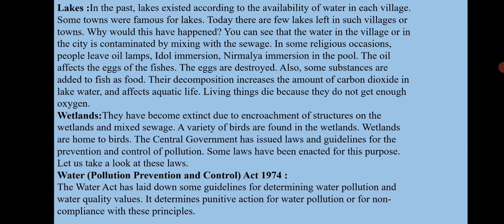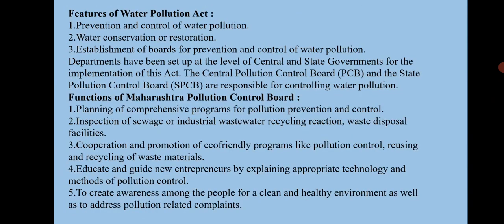The central government has issued laws and guidelines for the prevention and control of pollution. The Water Pollution Prevention and Control Act of 1974 laid down guidelines for determining water quality and water pollution. Its features include: prevention and control of water pollution, water conservation and restoration, and establishment of boards for the prevention and control of water pollution. Various departments have been set up at the central and state government levels for the implementation of these laws.